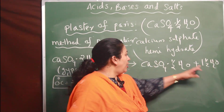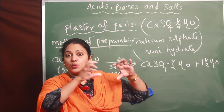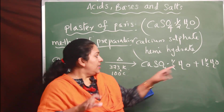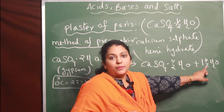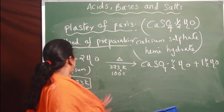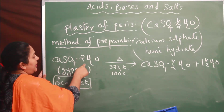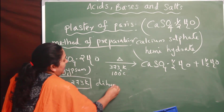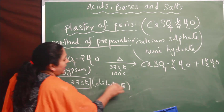Don't worry about the 1½H2O - as I told you, two calcium sulfate molecules share one water molecule in the structure, so definitely two molecules will be there and three molecules of water will be produced. The name for gypsum is calcium sulfate dihydrate - 'di' means 2, so CaSO4·2H2O is calcium sulfate dihydrate.